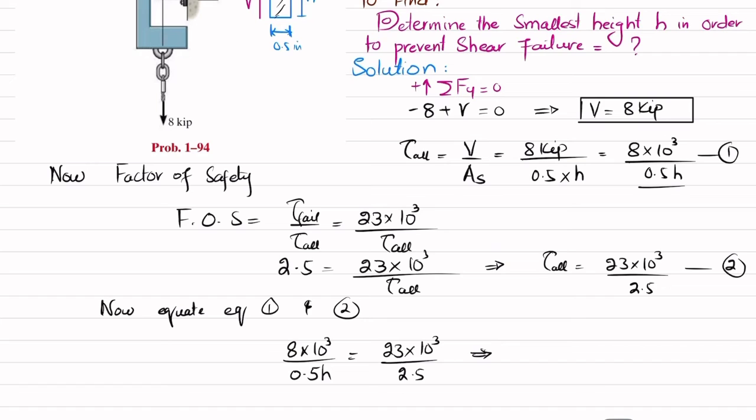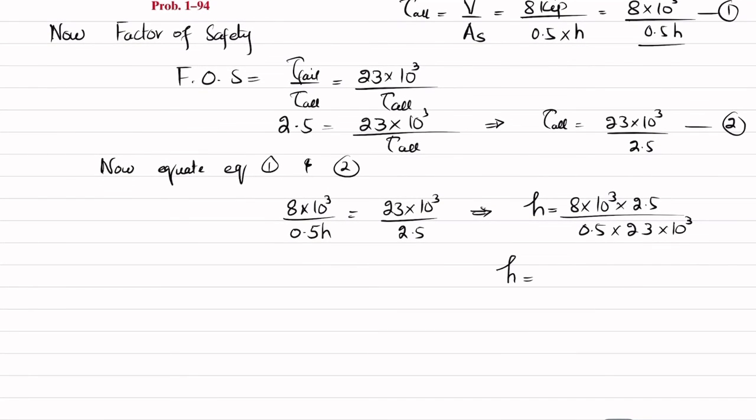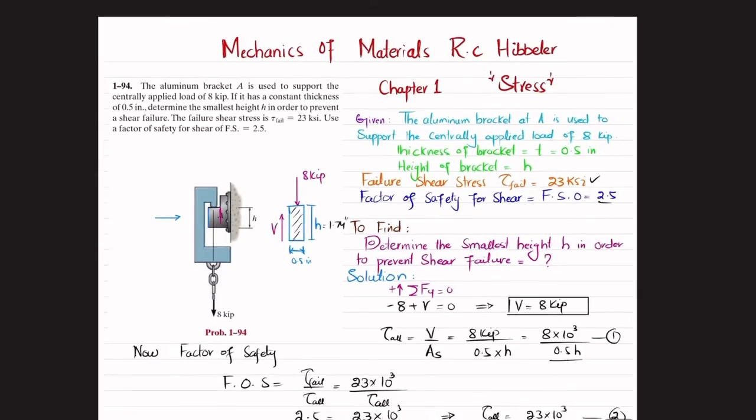So when you solve this, you will get the height will be equal to 1.74 inch. So this is the required minimum height h, it will be 1.74 inch. And that was all about this problem 1-94.